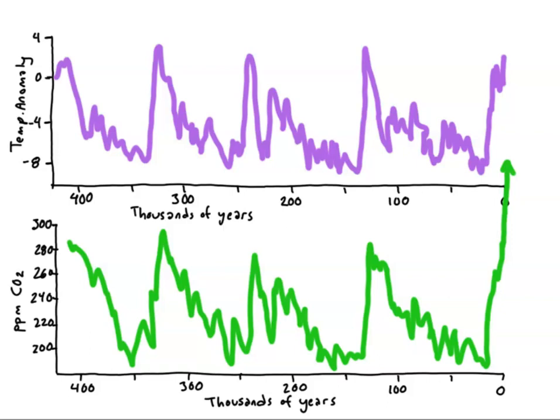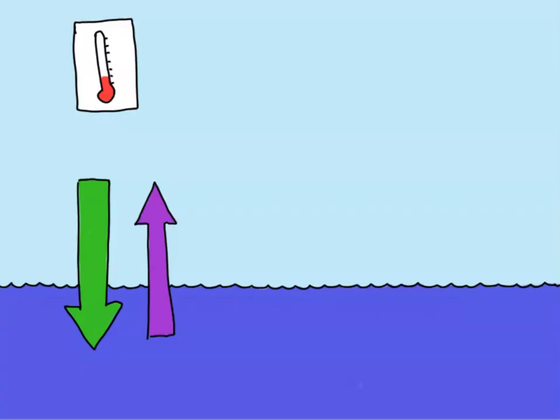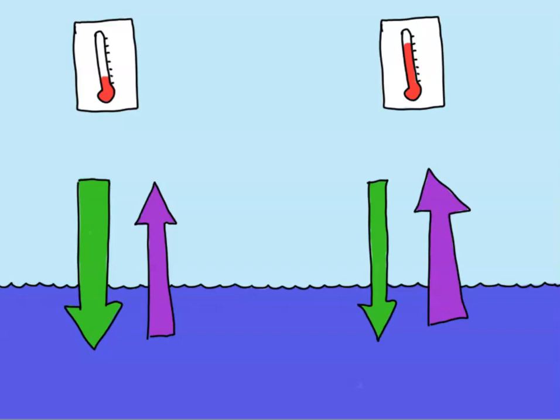Changes in CO2 levels match very closely with changes in temperatures, though the temperature changes begin slightly ahead of the CO2 changes. This indicates that the initial forcing comes from somewhere else — the changes in Earth's orbit and tilt that we just talked about. CO2 then acts as a feedback, enhancing the changes by altering the greenhouse effect. An important thing to remember is that the ocean and atmosphere are constantly exchanging CO2. Changes in temperature change the size and even direction of the net flow. Colder water can absorb more CO2, whereas warmer water absorbs less.